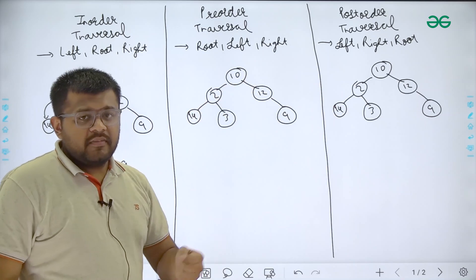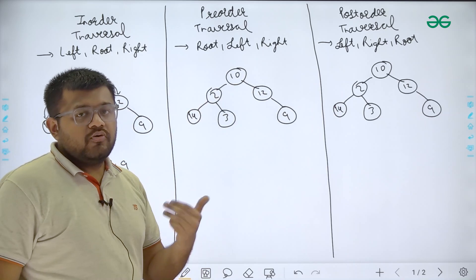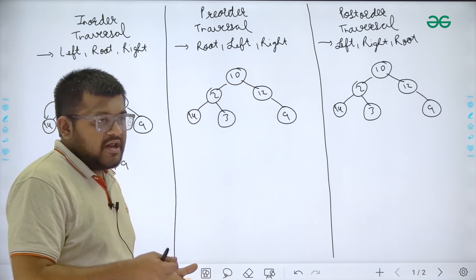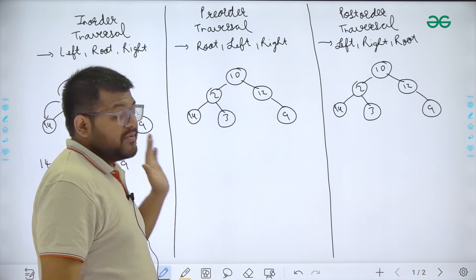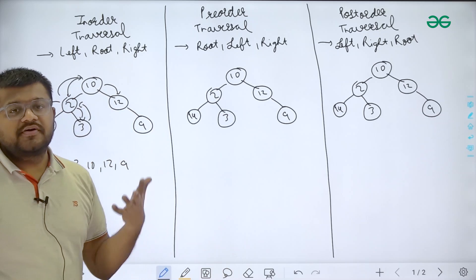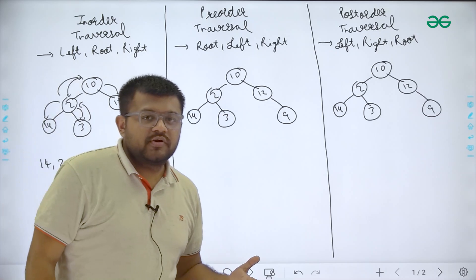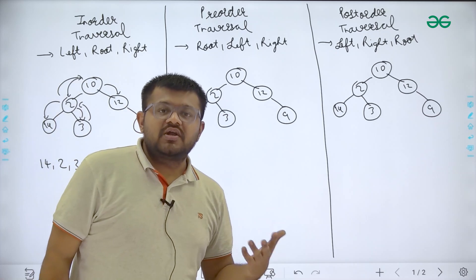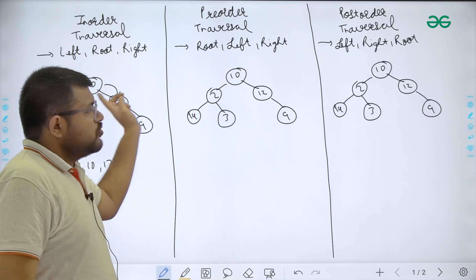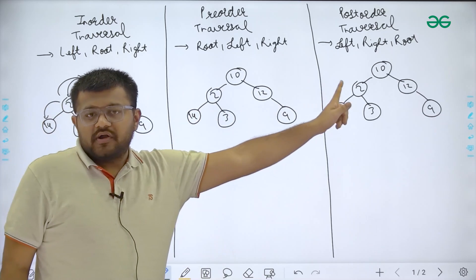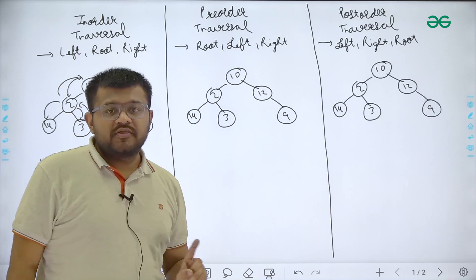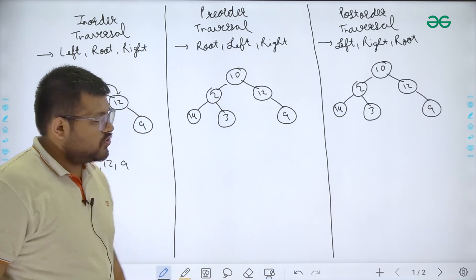Let me tell you a trick on how to write down these traversal values on pen and paper — how to do in-order, pre-order, and post-order traversal efficiently. Then I will also tell you how to remember this order, and then we will look at the code for all three traversals.